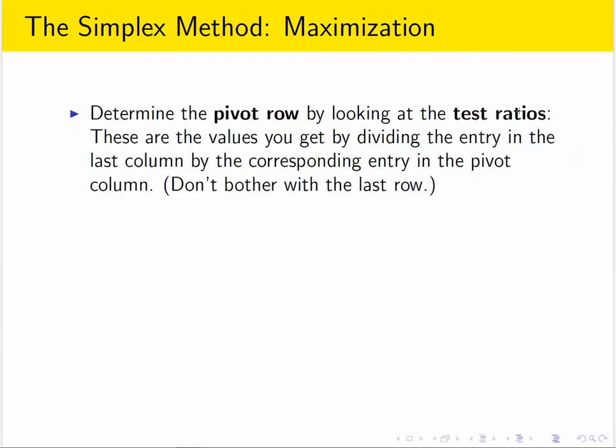Now the next thing we do, once we have a pivot column, is to calculate test ratios for that pivot column. And do that for each row. So we know we're looking at the second column. To get the test ratios, we take the last column.